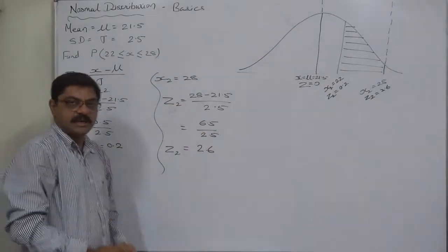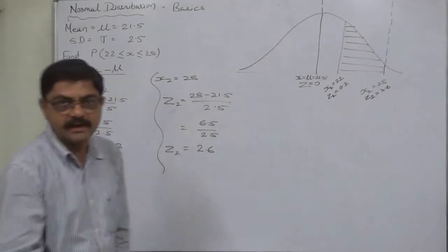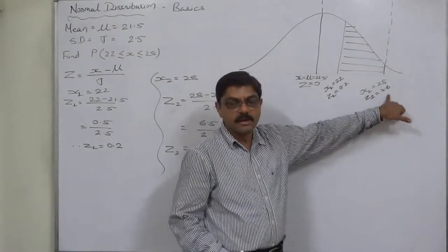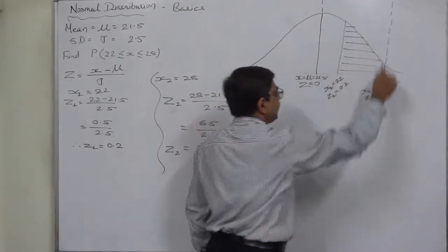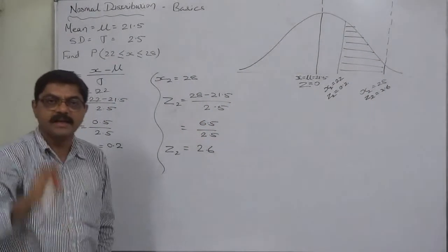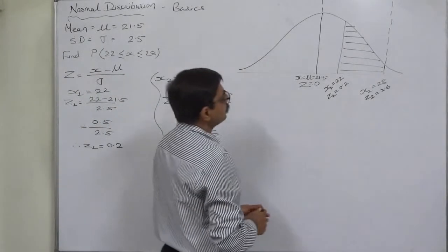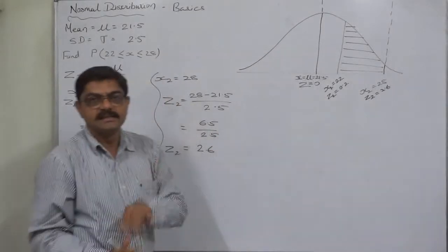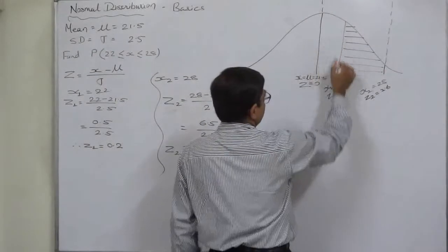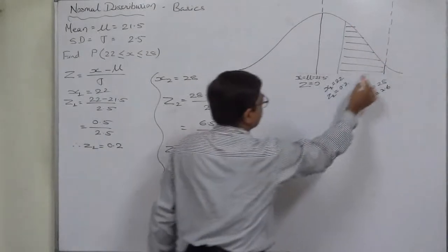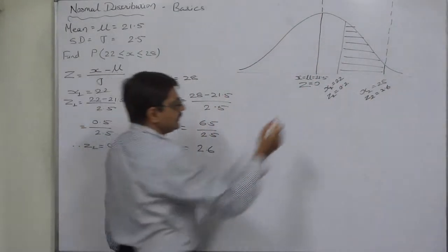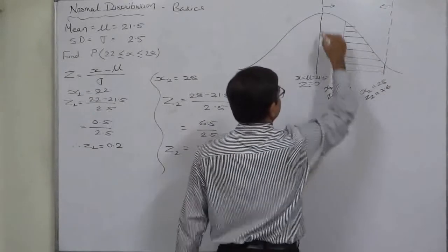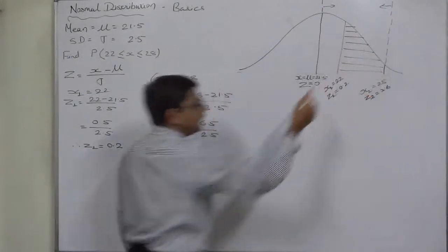In the tables readily available in reference books, the area shown is always between z=0 and some z value. The area between z=0 and z=0.2, and the area between z=0 and z=2.6 can each be found directly from the table. But the area between z=0.2 and z=2.6 cannot be found directly. The simple logic is: the difference between the greater area and the smaller area gives the area of interest. So subtracting the smaller area from the larger area gives the area we need.